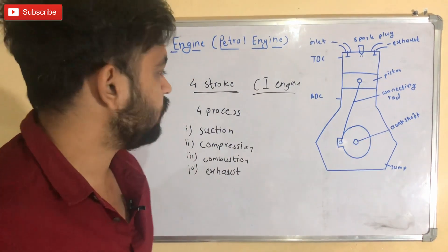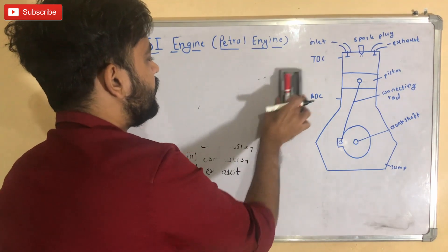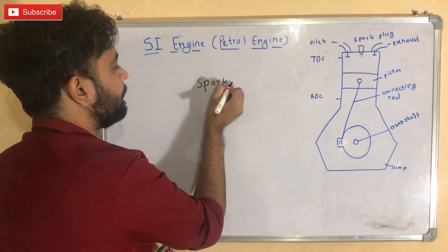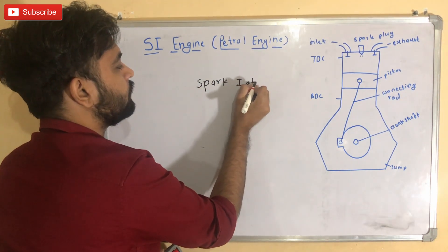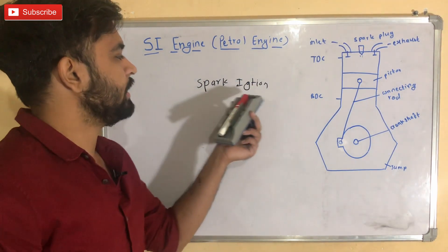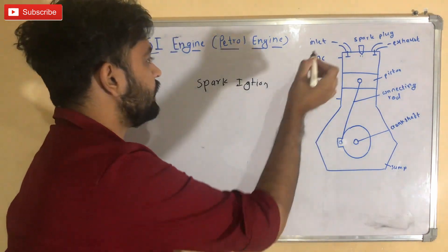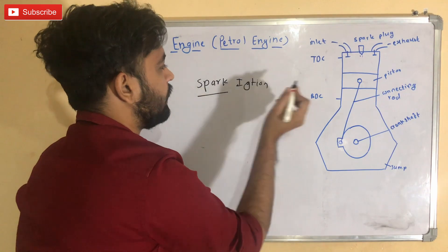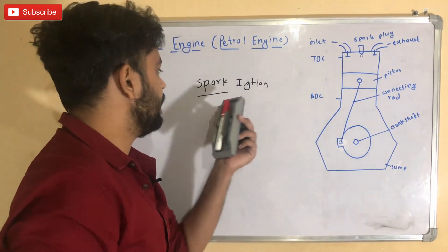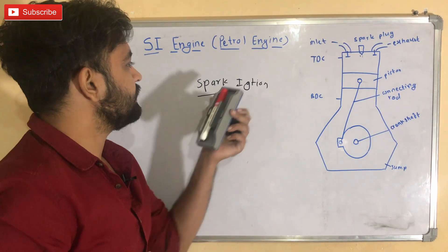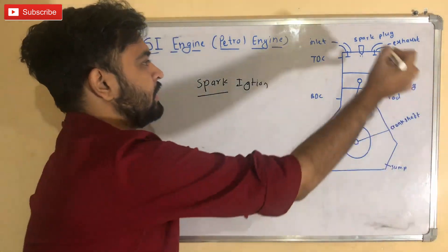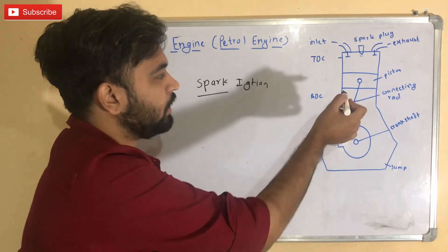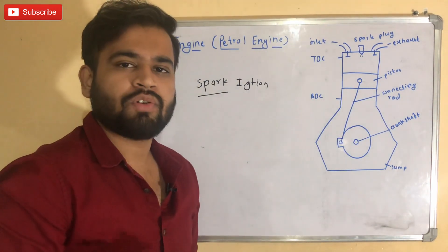Today's topic is specifically about the SI engine. As the name suggests, spark ignition means the ignition process starts because of a spark at the end of the compression stroke. This type of engine uses a spark plug to produce ignition at the end of the compression stroke. Let me show you how it works.